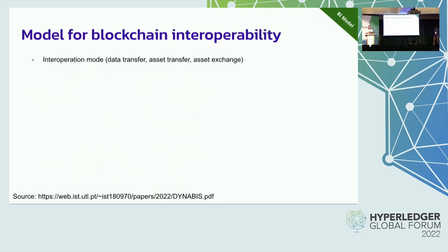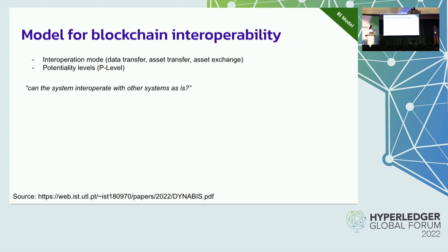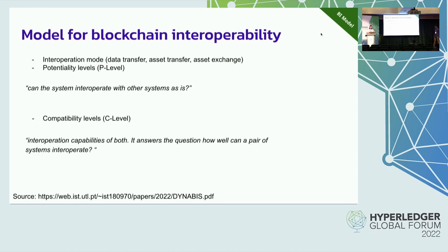When reasoning about interoperability it's important to understand what is the object that you want to interoperate. We call this the interoperation mode, and we divide it into data transfers, asset transfers, and asset exchanges — asset exchanges being different from asset transfers, which I'll explain shortly. We also want to measure whether a system can interoperate with other systems as it is; we call this the potentiality of a system and measure it with P-levels. Then we have C-levels for compatibility.